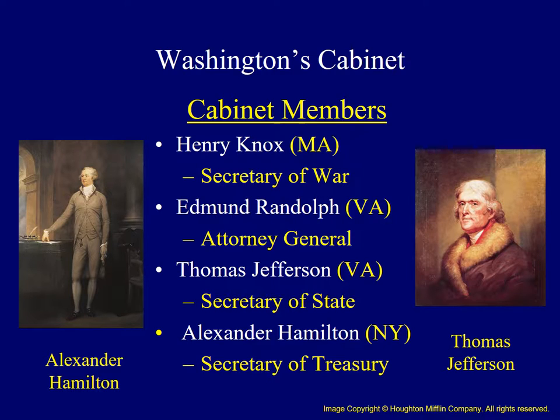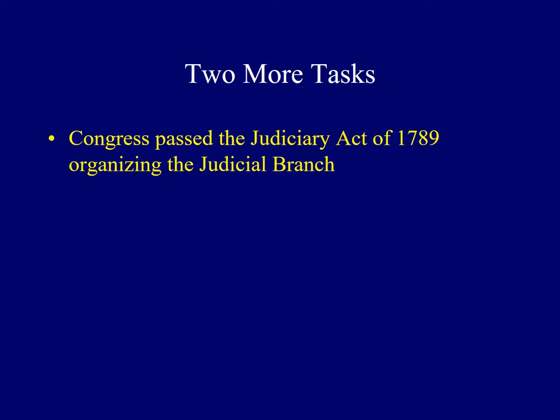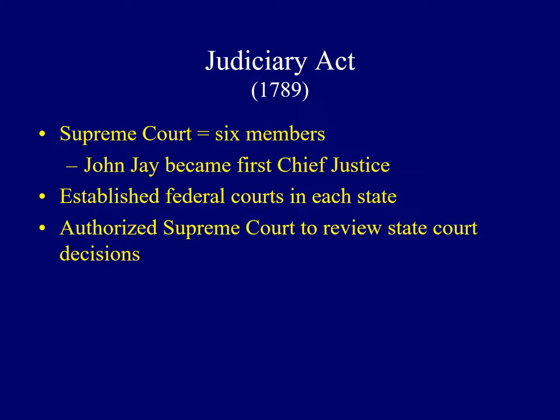Jefferson and Hamilton were probably the leading members of Washington's cabinet. With the executive department addressed, Congress set to work on two important tasks. The first was to organize the judiciary, and it did so with the Judiciary Act of 1789. The act established a six-member United States Supreme Court; John Jay was confirmed as the nation's first Chief Justice. It also established 13 federal district courts, one for each state, and gave the Supreme Court the power to review decisions of the states, reinforcing that it was the highest court in the land.